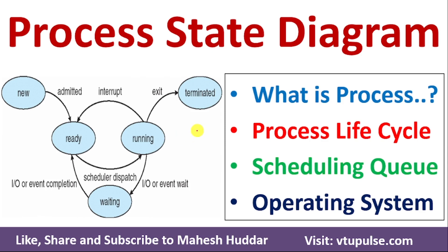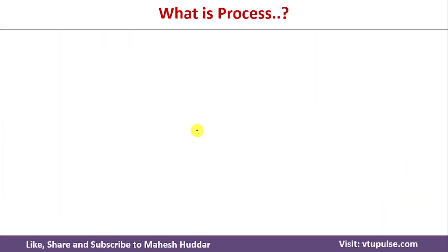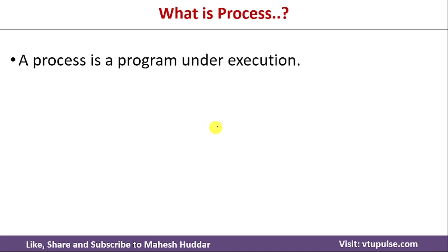Welcome back. In this video, I will discuss what is a process and what is the process lifecycle in an operating system. Whenever you write a program, by default, a program is saved onto secondary storage — it is called a passive entity. Whenever we want to execute that program, we need to bring it into primary memory and allocate CPU time. Then the program gets executed. A program under execution is known as a process.